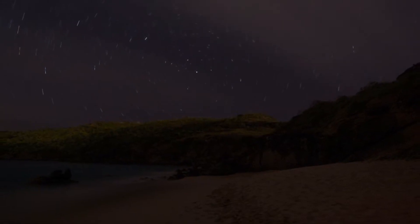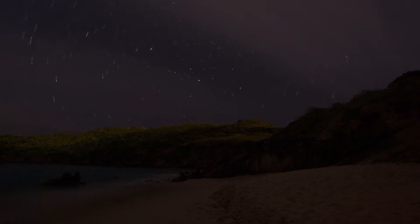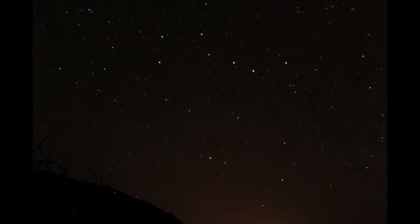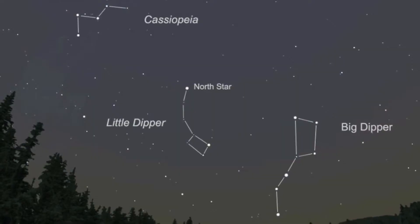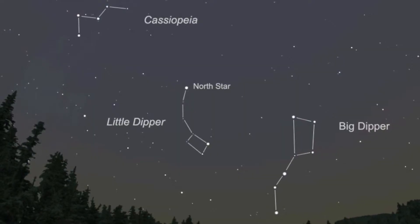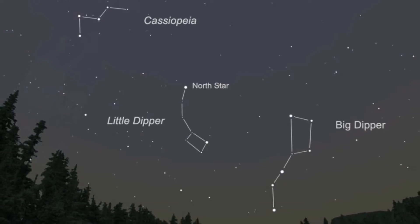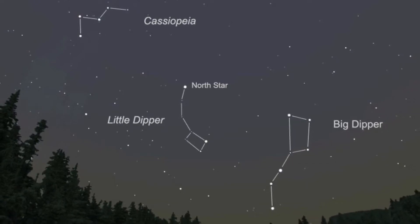Polaris is best found by using the constellation the Big Dipper or Ursa Major, or the constellation Cassiopeia. Either one will point you directly to Polaris. Once you've found Polaris, you can take a measurement with the sextant and then we can quickly calculate its latitude using the nautical almanac.